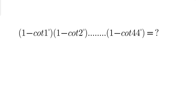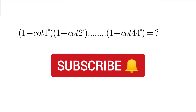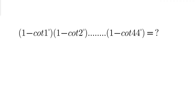Hello everyone, today we are going to solve this trigonometric problem where you have to find the product of these terms: (1 - cot 1°), (1 - cot 2°), all the way up to (1 - cot 44°).